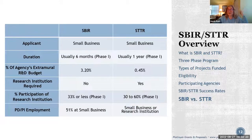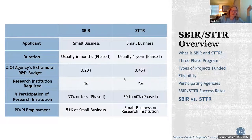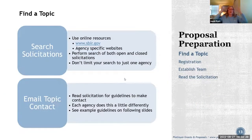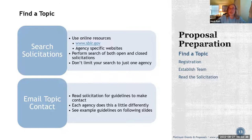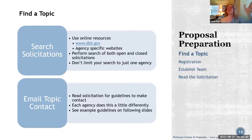So there's our SBIR/STTR overview. Now let's look at proposal preparation. The first steps are: find a topic by reviewing a solicitation, register your business, establish your team, and read the solicitation thoroughly. Let's go through each of these topics.